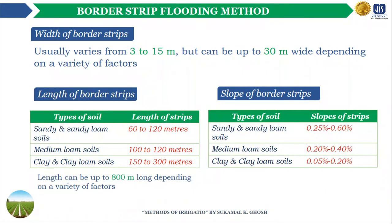The width of the border strip depends on the size of the irrigation stream and the degree of land leveling practicable. It usually varies from 3 to 15 meters, but can be up to 30 meters wide depending on various factors. When the size of the irrigation stream available is small, the width of the strips is reduced, but it is usually not less than 3 meters. Reducing the width too much means too many borders or levees must be formed, occupying a considerable area of land.